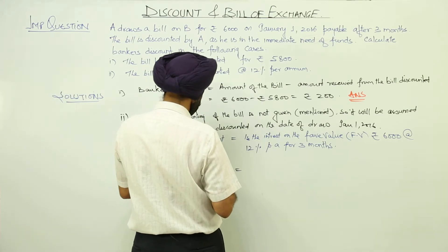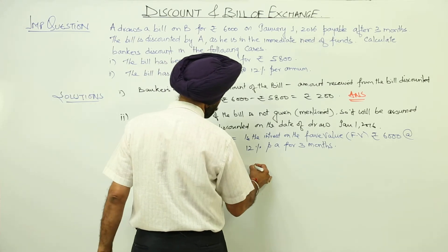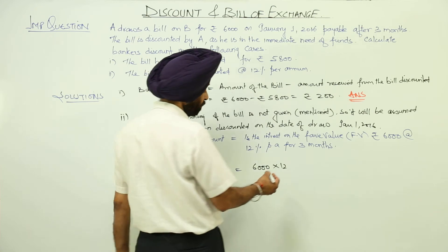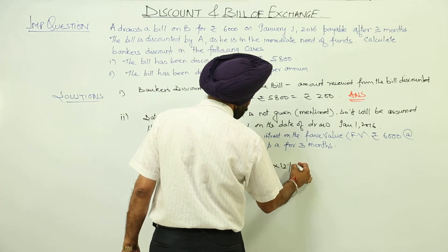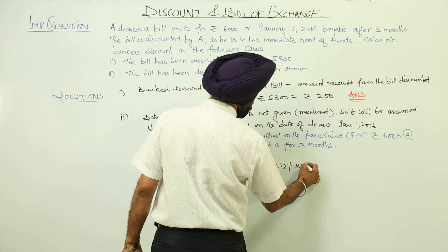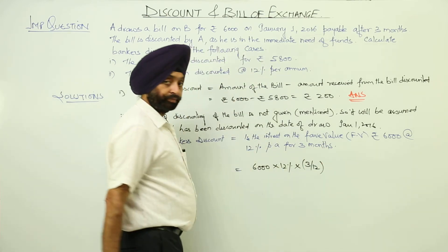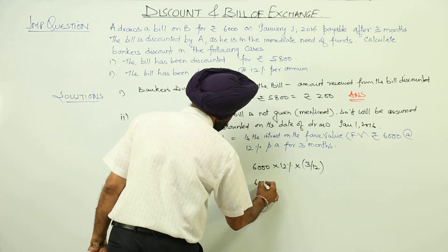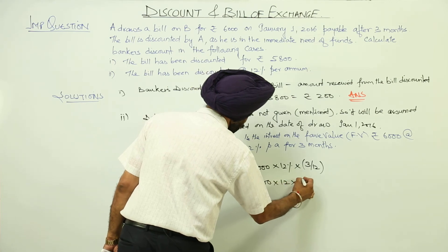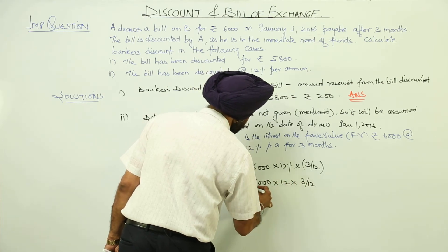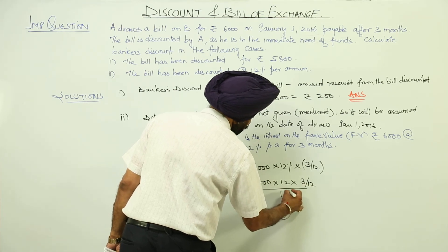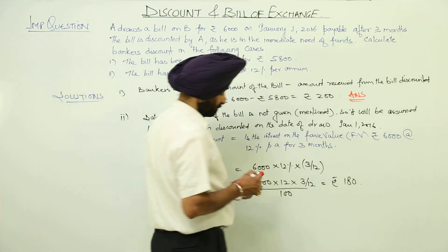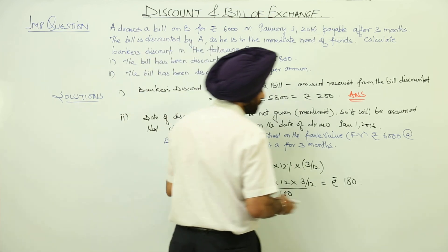So this will be 6000 × 12% × 3/12 to convert months into years, which equals 6000 × 12 × 3 divided by 12 × 100, equal to Rs. 180. So this is the second answer.